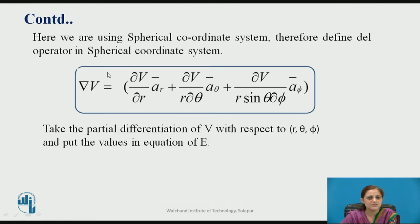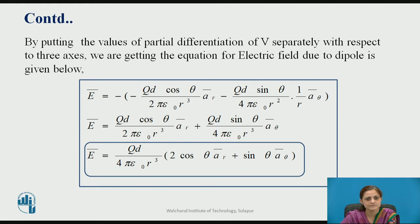Here we are using the spherical coordinate system. The del operator in spherical coordinates gives: gradient of V equals (dV/dR) a-bar_R plus (1/R)(dV/d-theta) a-bar_theta plus (1/(R sin theta))(dV/d-phi) a-bar_phi. Taking the partial differentiation of the electric potential with respect to R, theta, and phi separately and substituting these values into the equation for E-bar gives the electric field due to the dipole.